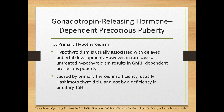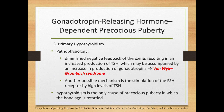Another etiology for GnRH-dependent precocious puberty is primary hypothyroidism. Although hypothyroidism is usually associated with delayed pubertal development, in very rare cases untreated hypothyroidism can result in GnRH-dependent precocious puberty, caused by primary thyroid insufficiency — usually Hashimoto thyroiditis. The pathophysiology involves diminished negative feedback of thyroxine, resulting in increased TSH production, which may be accompanied by increased gonadotropins — this is the Van Wyck-Grumbach syndrome. TSH may also stimulate the FSH receptor directly. Notably, hypothyroidism is the only cause of precocious puberty in which bone age is retarded.